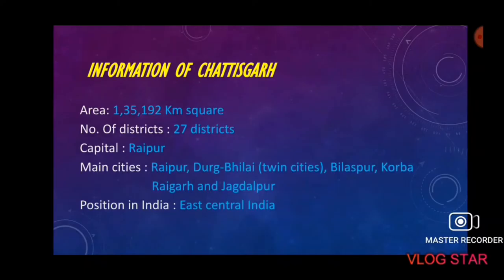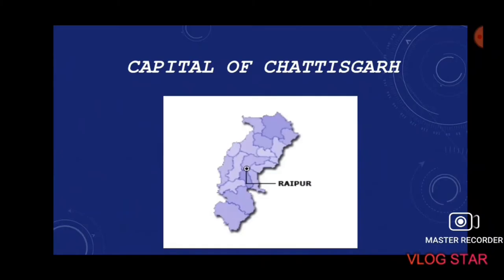Raipur is the capital of Chhattisgarh. Some basic information: the area of Chhattisgarh is 1,35,192 km². There are 27 districts in Chhattisgarh. The main cities are Raipur, Durg-Bhilai (which are twin cities), Bilaspur, Korba, Raigarh, and Jagdalpur. The position of Chhattisgarh in India is East Central India, as you can see in the map here.